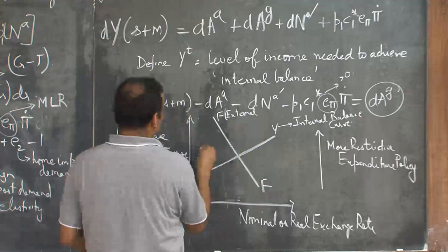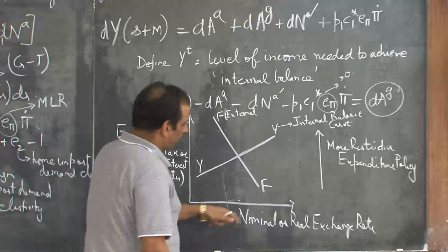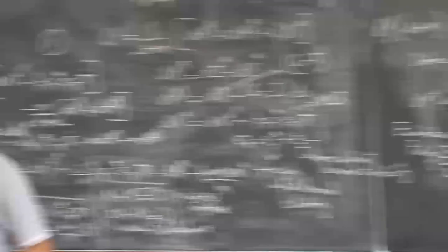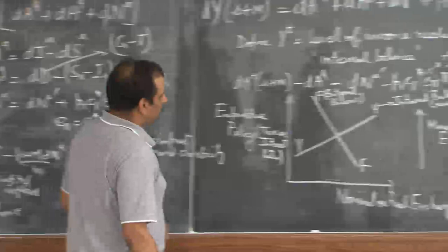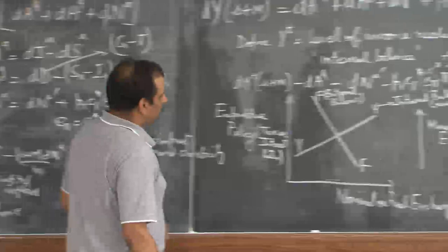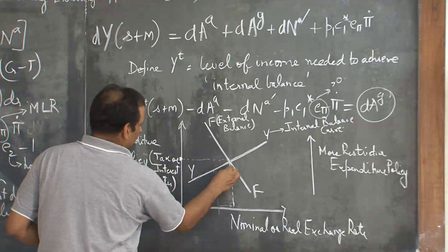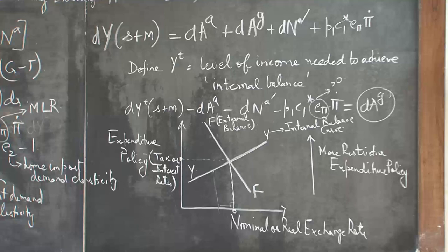The optimal levels of expenditure policy and nominal exchange rate which will give you both internal and external balance is at the intersection of YY and FF curves. This is the exchange rate and expenditure policy level which will give you both external and internal balance simultaneously.